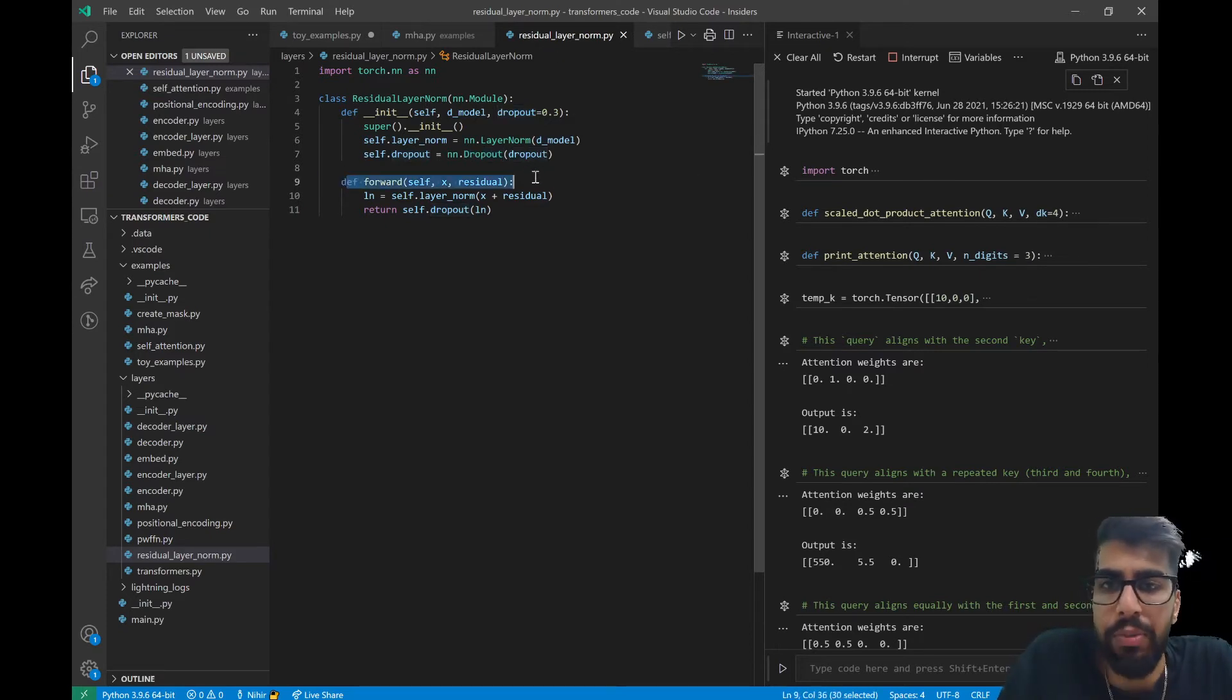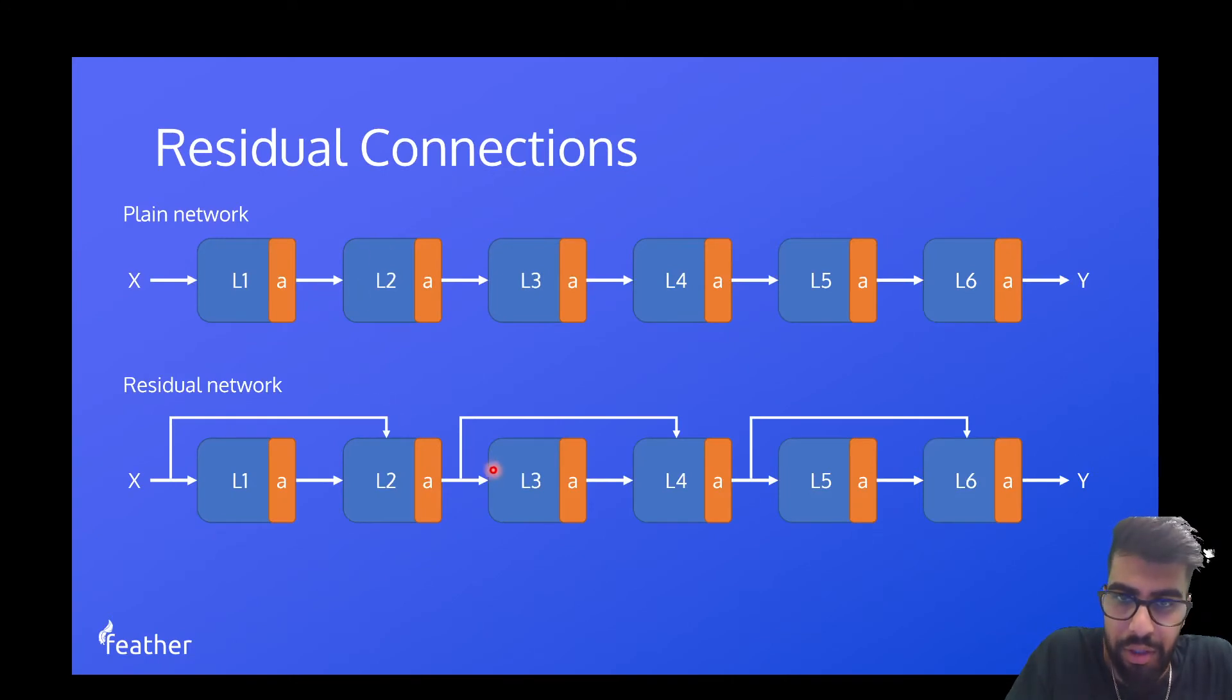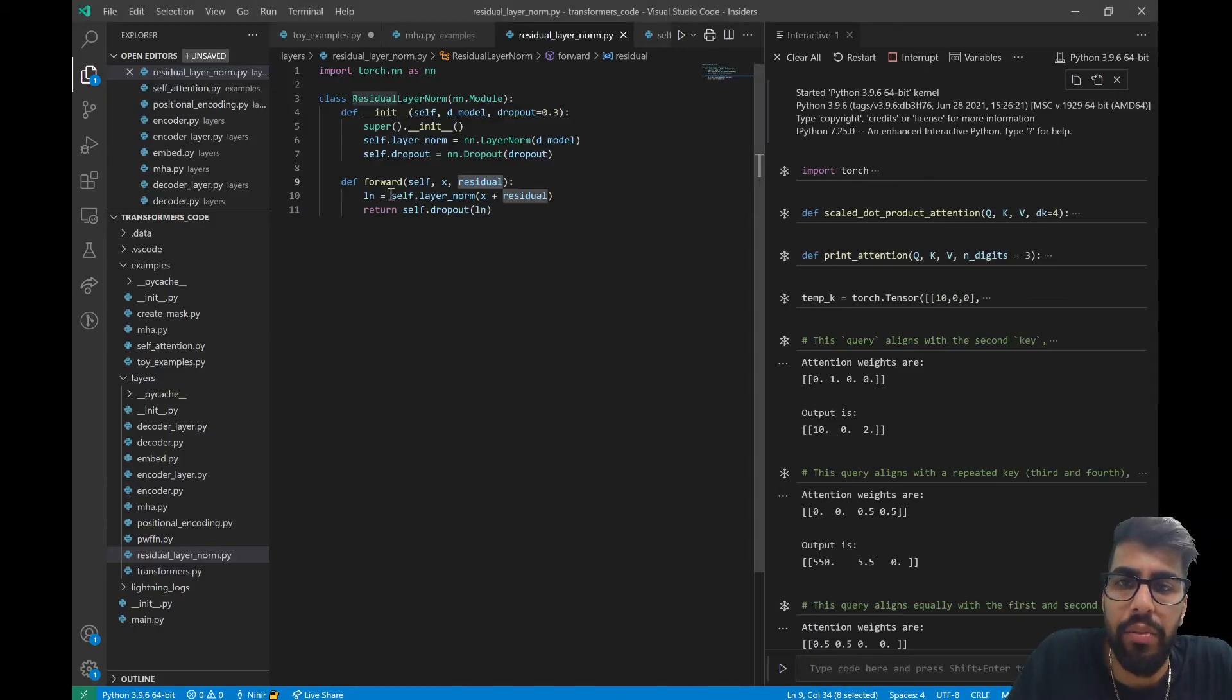Now in the forward pass what we're going to do is we're going to feed in x and we're also going to feed in our residual. So if we take a look at our presentation again, let's say we're on layer three, we're going to layer four, we're going to feed in x which will be the output of layer three and what we want to apply a residual to which will be the output of layer two. And then we just add the two together. That's literally all we do. We just add x and the residual connection or the residual tensor. We'll feed that through the layer normalization and then we'll return it with dropout applied to it.